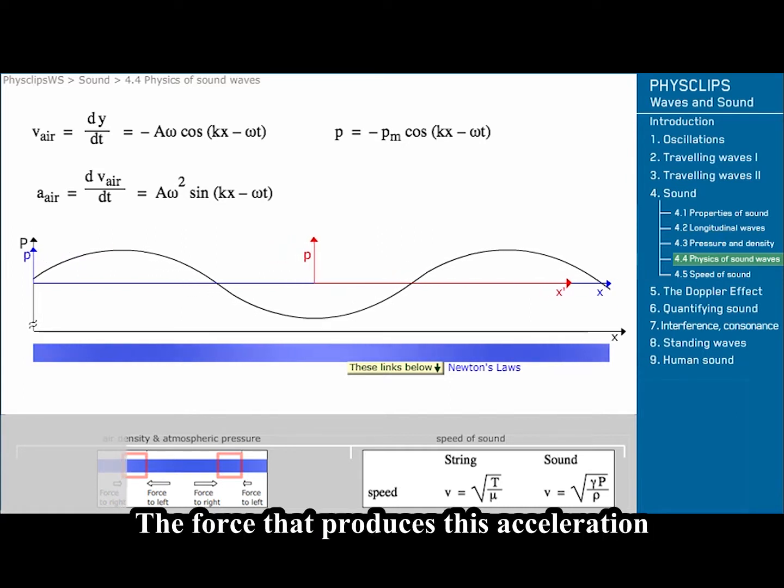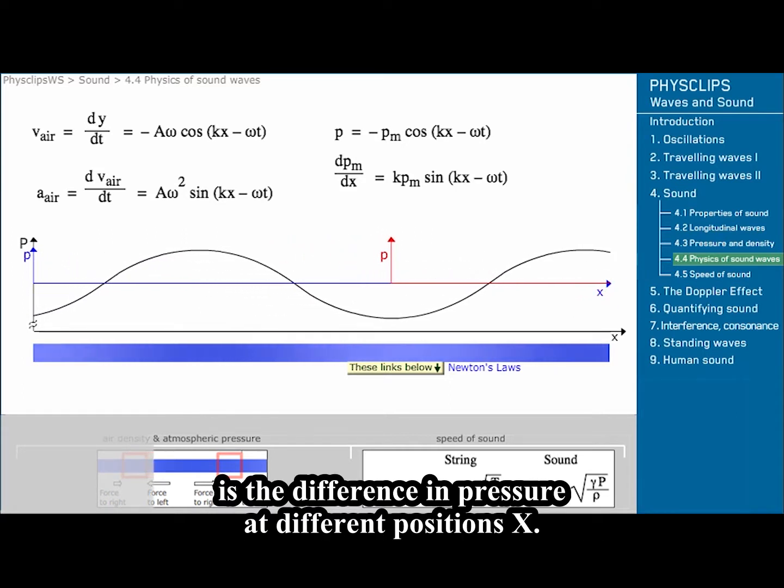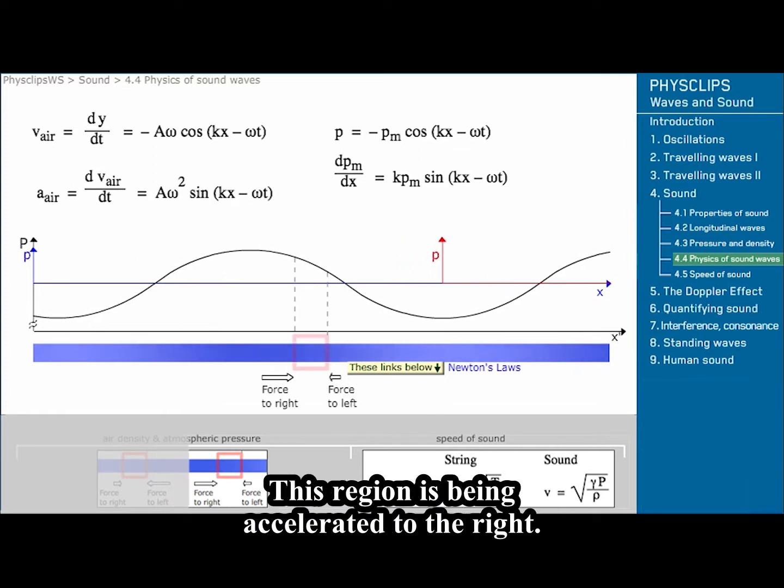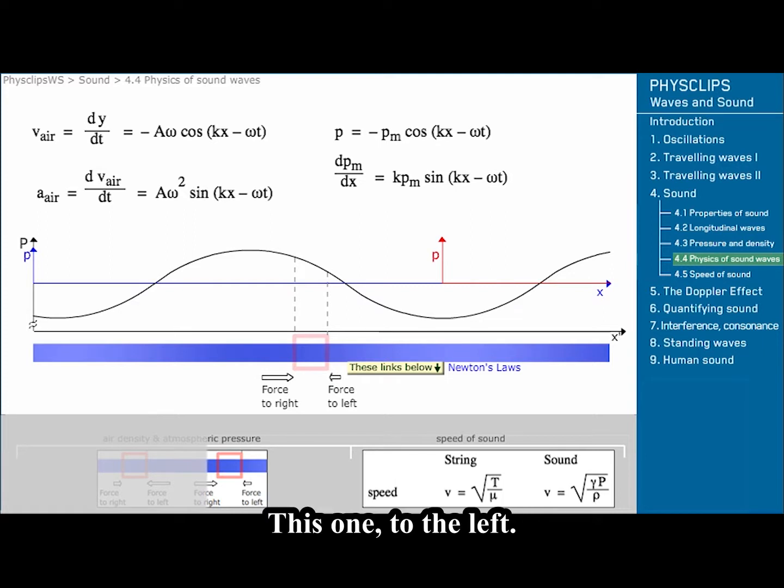The force that produces this acceleration is the difference in pressure at different positions x. This region is being accelerated to the right. This one to the left.